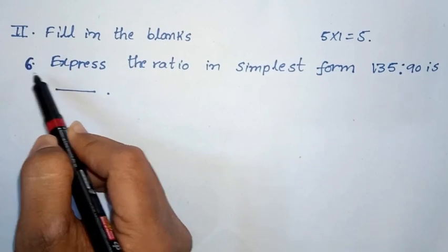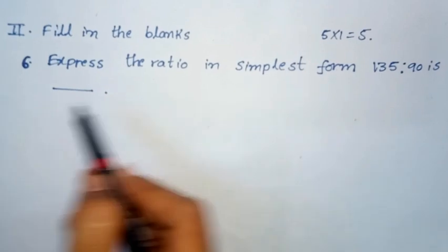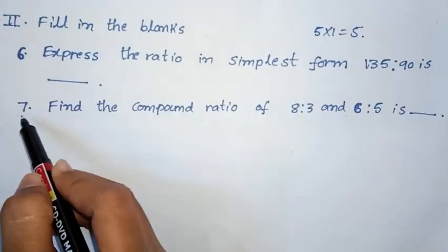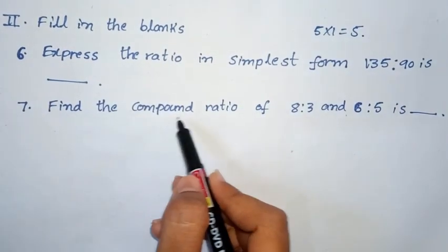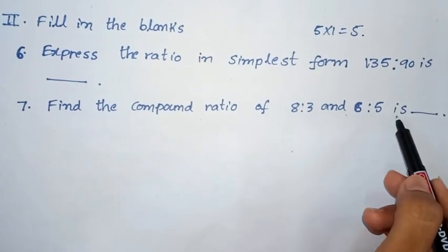Sixth question, express the ratio in simplest form. 135 is to 90 is dash. Seventh question, find the compound ratio of 8 is to 3 and 6 is to 5 is dash.